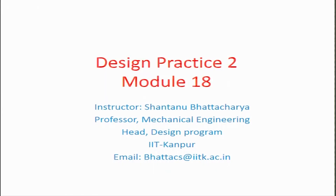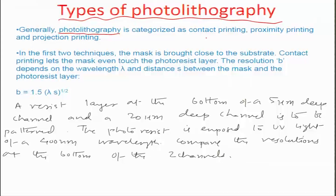Hello and welcome to this design practice 2, module 18. We were discussing photolithography and in that context I would like to do some more analysis related to the process. As we already found out, the process of lithography is categorized into 3 different ways of doing printing: one is contact, another is proximity, and the third one is projection printing.